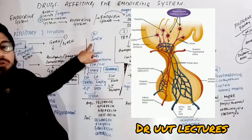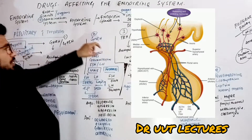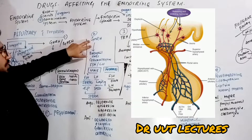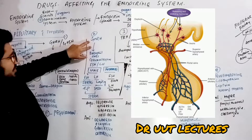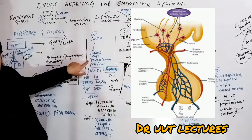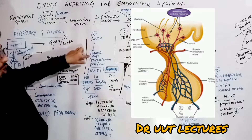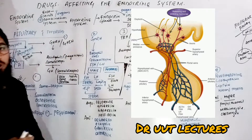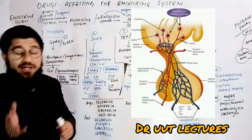We have gonadotropin releasing hormone from the hypothalamus. This is released via the hypophyseal portal system, which brings it to the basophil cells in the anterior pituitary where the gonadotrophs are available. Those gonadotrophs are stimulated by gonadotropin releasing hormone, which then causes the release of follicle stimulating hormone and luteinizing hormone. Both of these have important functions in the male as well as in the female.